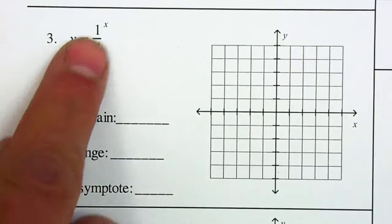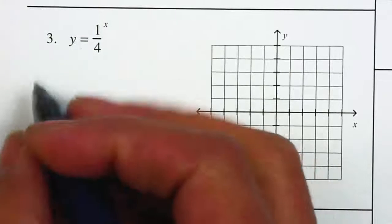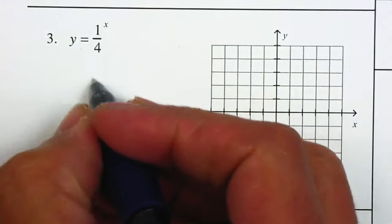The first thing that you should notice is that your x, your variable, is the exponent. So therefore, this is going to be an exponential growth or an exponential decay.